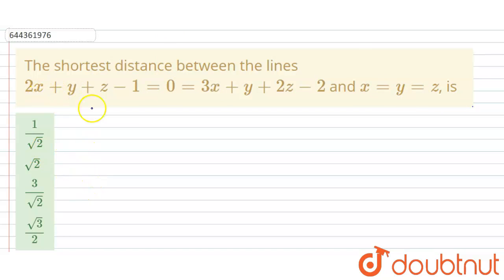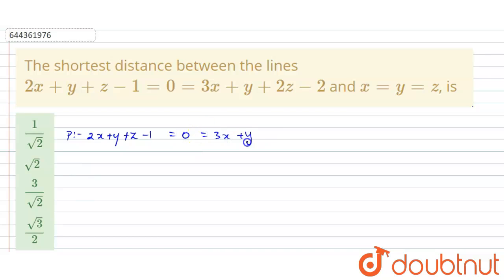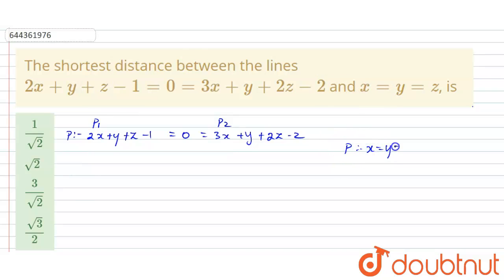Let's move to the answer. First I'm going to write down the given planes. Plane 1 is 2x + y + z - 1 = 0, and Plane 2 is 3x + y + 2z - 2 = 0. The third plane is x = y = z.